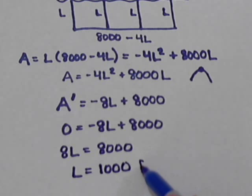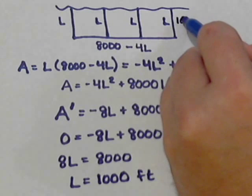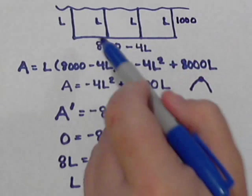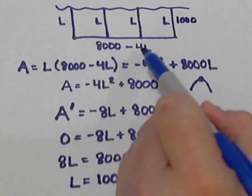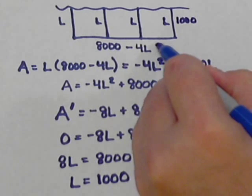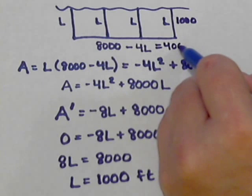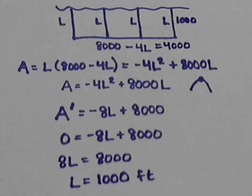And so what we see is that the length that we have to use to maximize the area needs to be 1,000 feet. So our length is going to be 1,000. And our width is 8,000 minus 4 times the length. So 4 times 1,000 is 4,000. So 8,000 minus 4,000 tells us that the width would have to be 4,000.